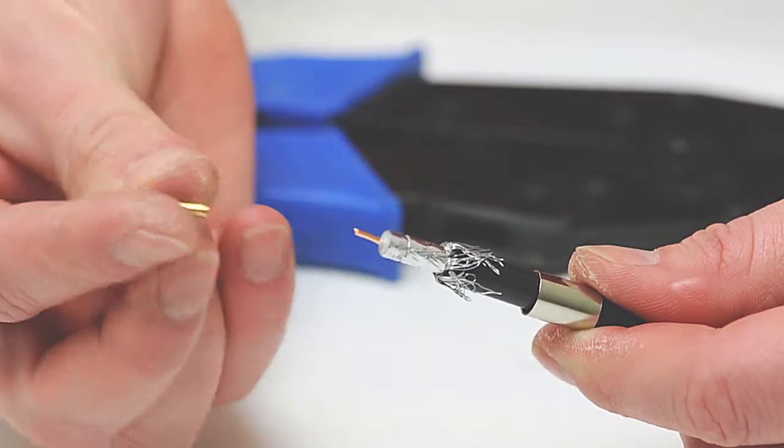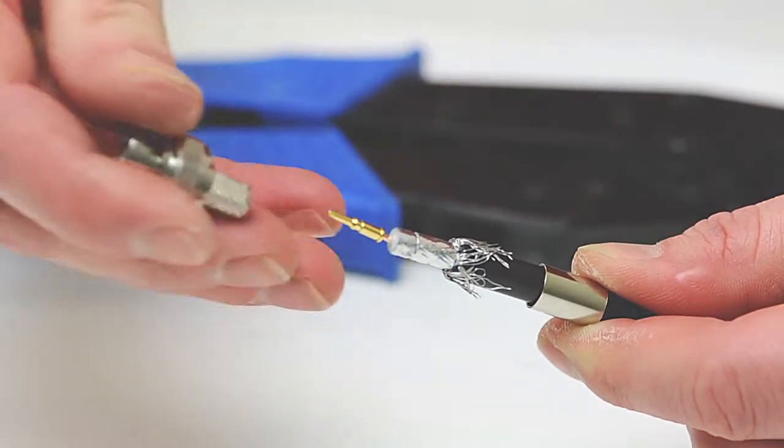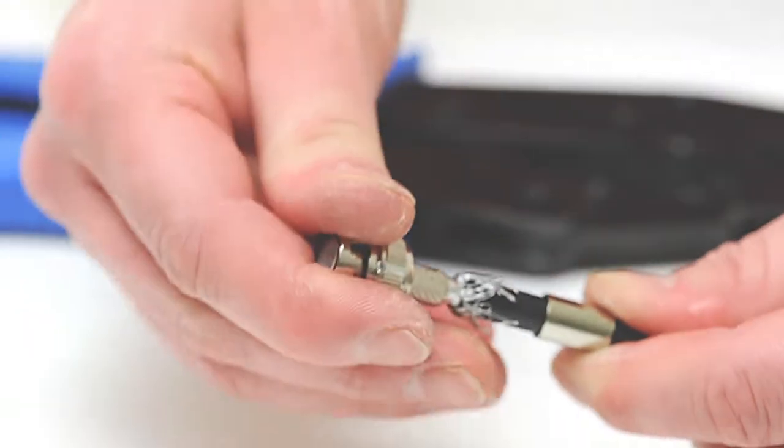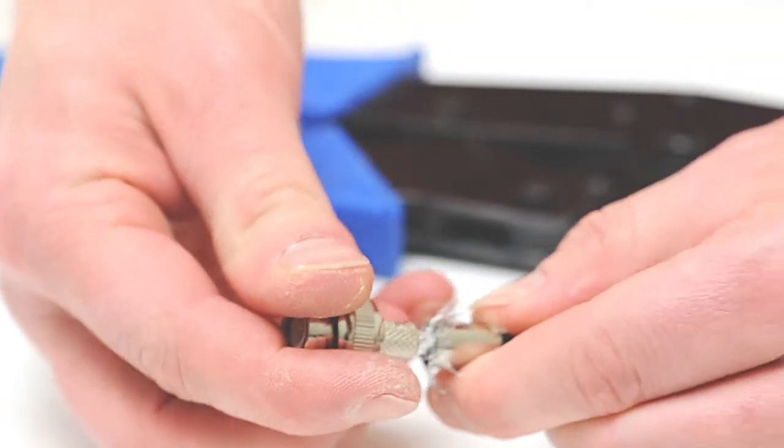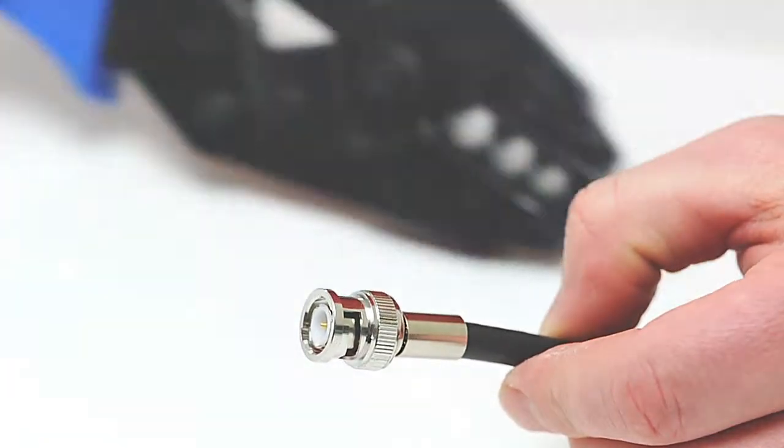Insert the center pin onto the center conductor. Next, take the BNC housing and slide it all the way onto the cable. Slide the ferrule back over the jacket, making sure it holds the braid onto the connector.